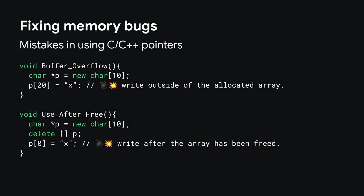Let's start by recapping what memory safety bugs are and where they might be present in your codebase. Memory bugs are mistakes in handling memory in native languages like C or C++. They are relatively easy to introduce, and in this slide you can see two of their most common forms: buffer overflow and use-after-free.